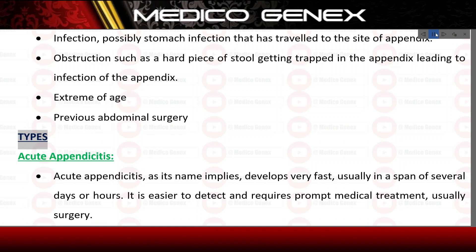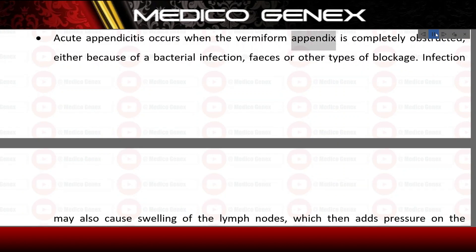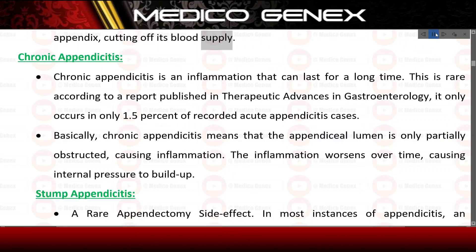Types. Acute appendicitis, as its name implies, develops very fast, usually in a span of several days or hours. It is easier to detect and requires prompt medical treatment, usually surgery. Acute appendicitis occurs when the vermiform appendix is completely obstructed, either because of a bacterial infection, feces, or other types of blockage. Infection may also cause swelling of the lymph nodes, which then adds pressure on the appendix, cutting off its blood supply.